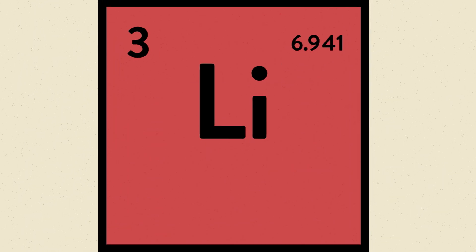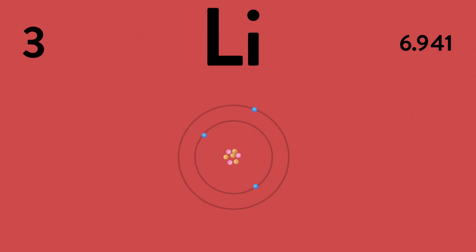Lithium is in period 2, which means it has two electron shells. Its atomic number is 3, so a neutral lithium-ion configuration looks like this.